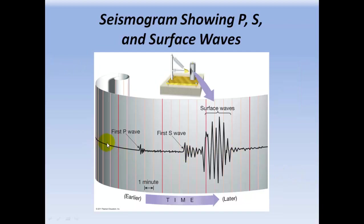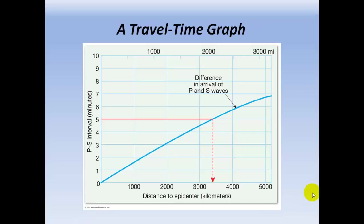Here's our seismogram. Here's our first P wave and there's our first S wave. We count how many minutes — let's say five minutes have lapsed between the first P wave and the first S wave. Now we use a time travel graph. We look on the left side for that time difference between the P and S wave arrivals — there's the five minutes. We fold across until we meet the time curve, then drop down, and we're about 3,400 kilometers from the epicenter.